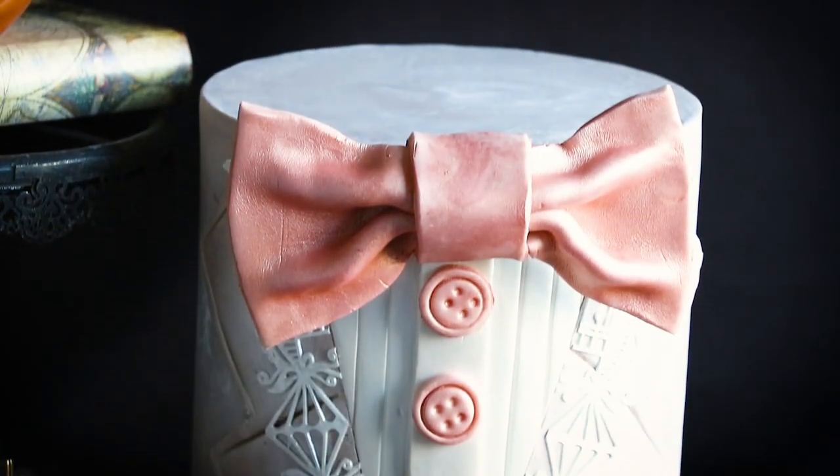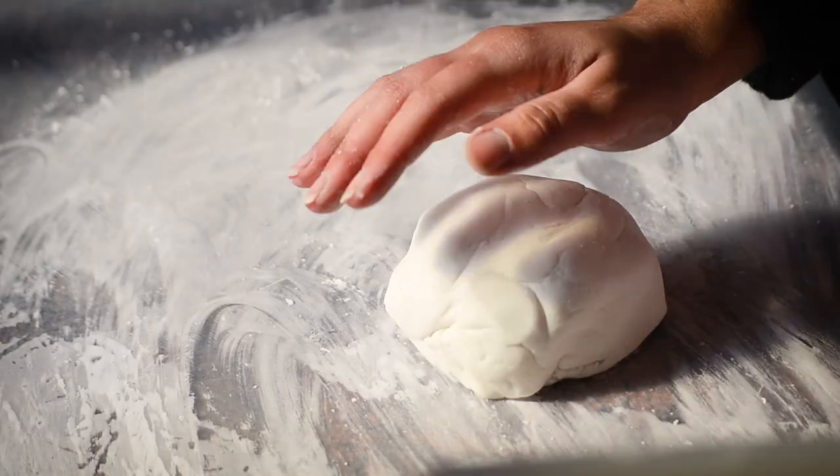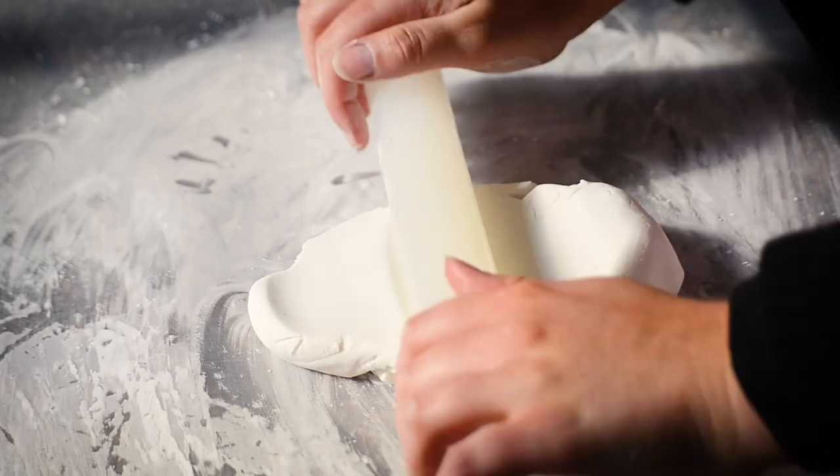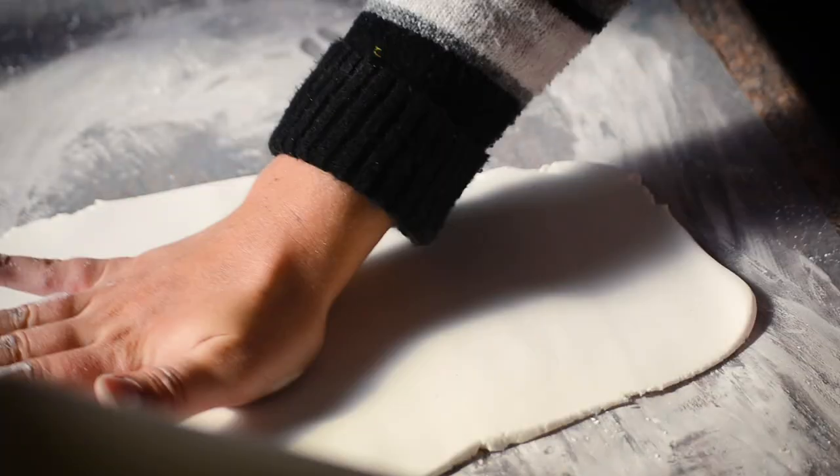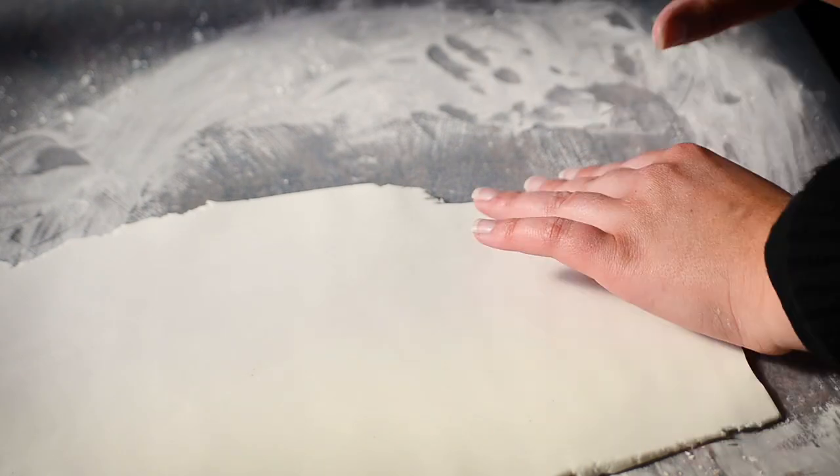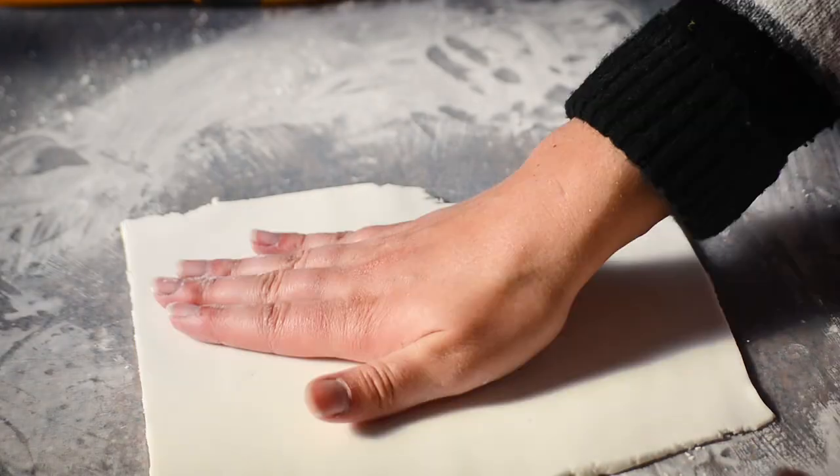I decided to make a second Father's Day cake. This time making it more modern and sophisticated. Roll out some white fondant. I then used my ruler and a knife to cut out a triangle which would form the front of my suit cake. I also cut a strip to put buttons on later.